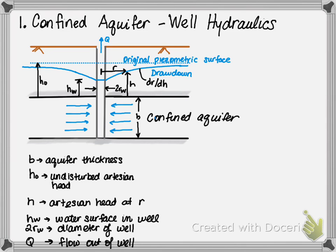H0 is the water table. H is the artesian head at R, where R is some distance away from the well. HW is the water surface within the well. 2RW is the diameter of the well, and Q is the flow out of the well.